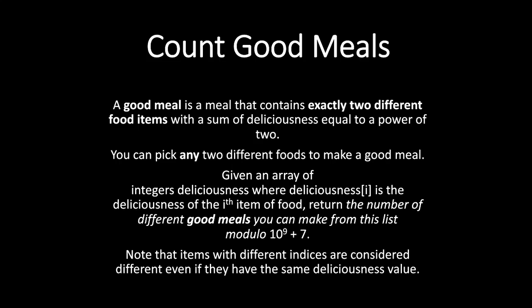Given an array of integers deliciousness where deliciousness[i] is the deliciousness of the i-th item of food, return the number of different good meals you can make from the list modulo 10^9 plus 7. Note that items with different indices are considered different even if they have the same deliciousness value.